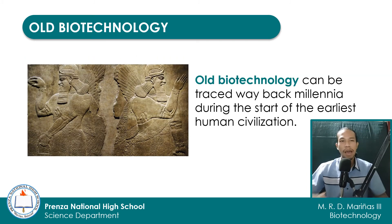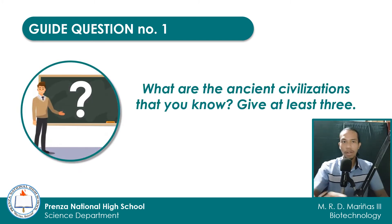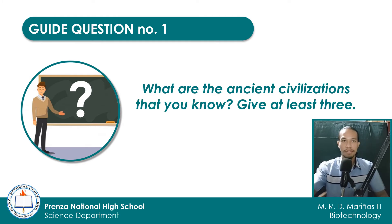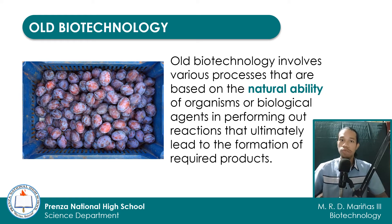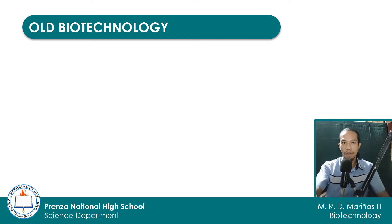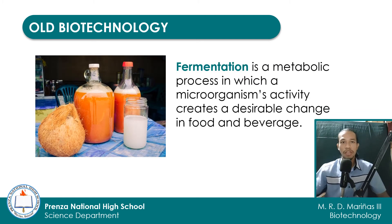Old biotechnology can be traced way back millennia during the start of the earliest human civilizations. Can you still remember some of the world's earliest civilizations? Please give at least 3 of them and write your answer on the space provided in the activity sheet. Old biotechnology involves various processes based on the natural ability of organisms or biological agents in performing reactions that ultimately lead to the formation of required products. The picture on this slide shows fruits with natural yeast on their skin, which was used by early humans to ferment and preserve their harvest. One example of old biotechnology is fermentation. Fermentation is a metabolic process in which a microorganism's activity creates a desirable change in food and beverage. Some of the common examples of fermented products are cheeses, vinegars, and alcoholic beverages such as tuba and lambanog.